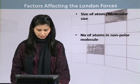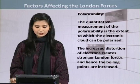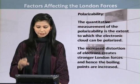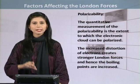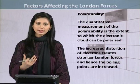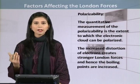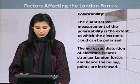But before discussing, there is an important terminology called polarizability which is important to understand. What is polarizability? Polarizability is the quantitative measurement of the extent to which the electronic cloud can be polarized. We want to disturb the electronic cloud of a particular atom or molecule and know to what extent we can do so. This parameter is called polarizability — a quantitative measurement of how much we can distort the electronic cloud.